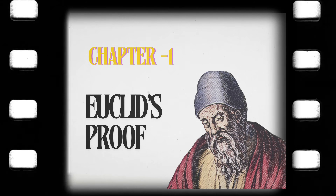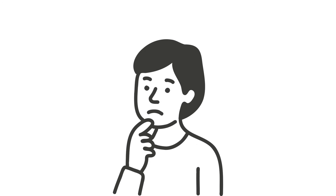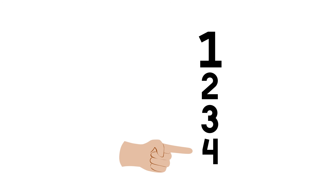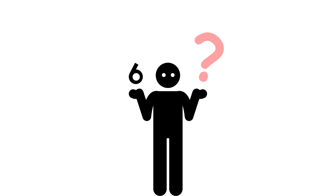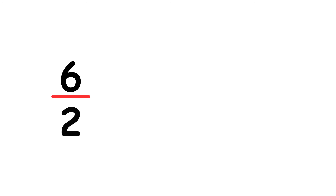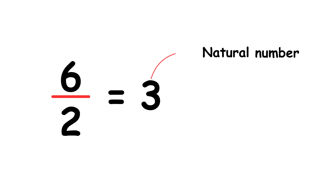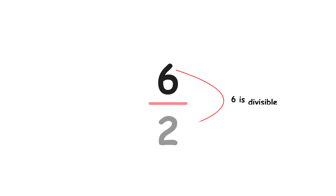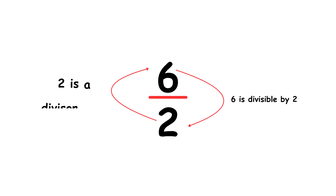Euclid's proof. Think of a natural number, that is a number used for counting, like 6. Next, think of another natural number, like 2. If we calculate 6 divided by 2, the result is 3. Since 3 is also a natural number, we say that 2 divides 6, that 6 is divisible by 2, or that 2 is a divisor of 6.